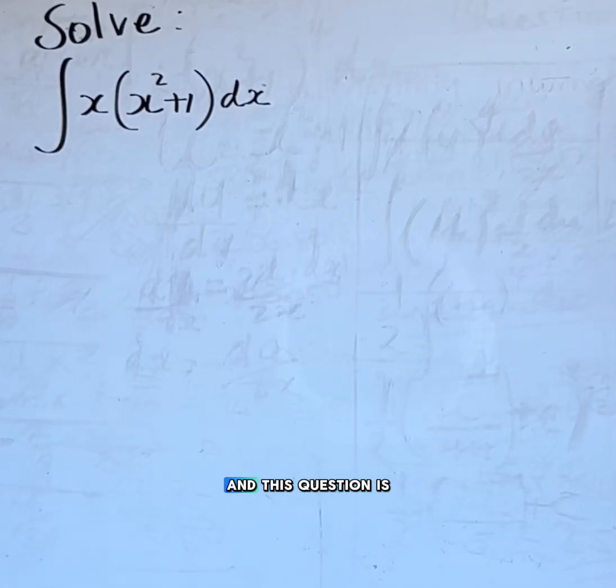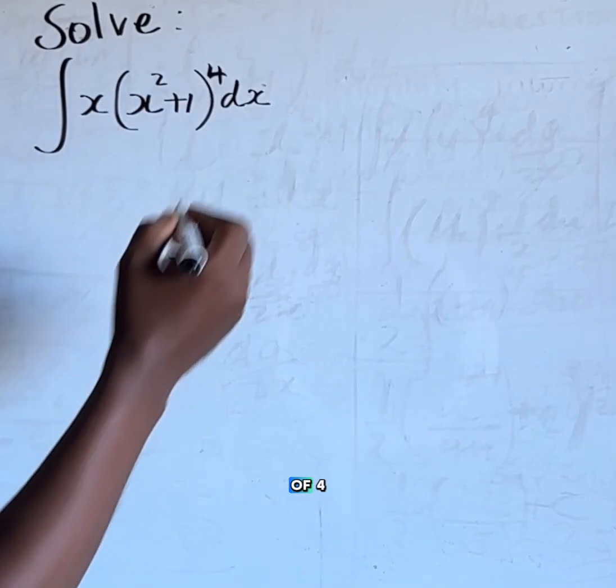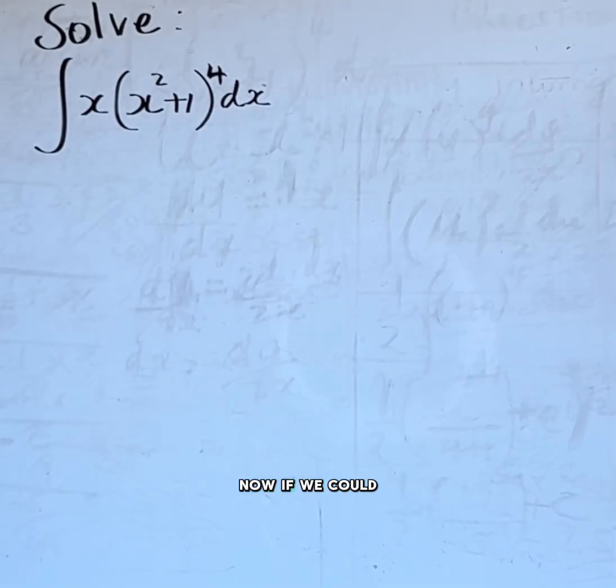This question is the integral of x multiplied by x squared plus 1 raised to the power of 4. Now if we use the normal integration method we need to expand the function x squared plus 1 to the power of 4 and then multiply by x. That will complicate the situation and be very difficult to integrate that way.